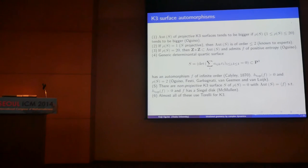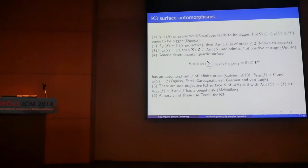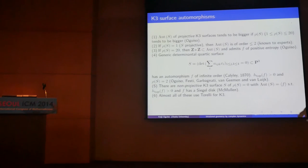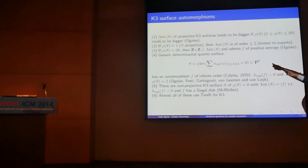For example, in the K3 surface case, I observed that the automorphism group tends to become bigger and bigger if we consider a family of projective K3 surfaces. If Picard number is one, then the automorphism group is almost nothing. But if Picard number is much more possible, then automorphisms become quite complicated and admit positive entropy elements. So the maximal possible Picard number K3 surface admits primitive automorphisms.